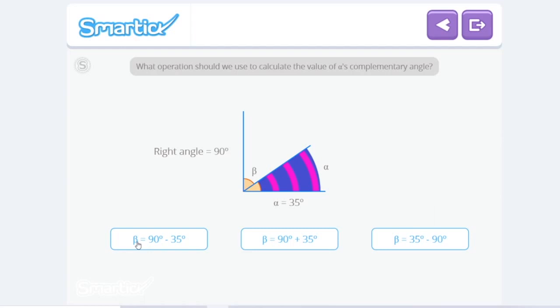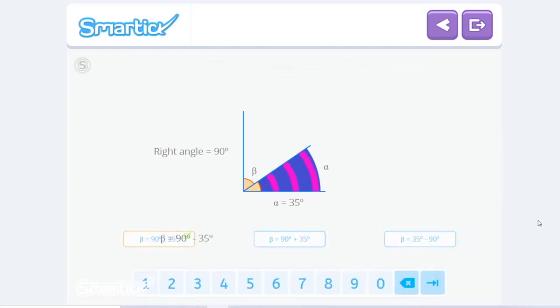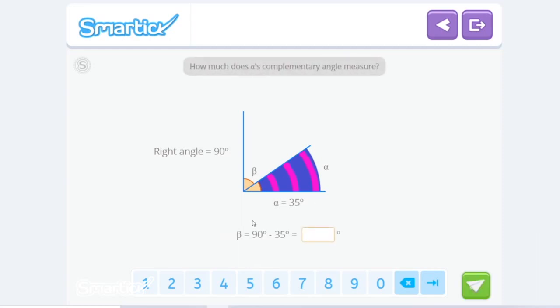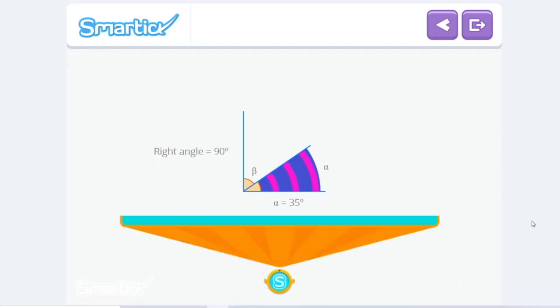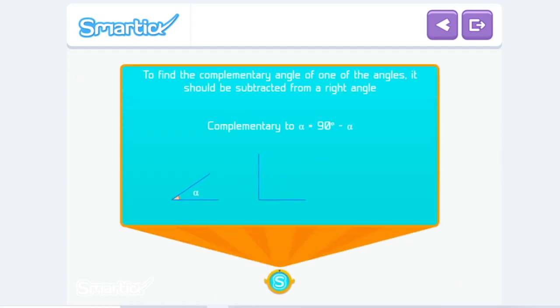So I think it's this one, 90 degrees minus 35. Nice job! How much does alpha's complementary angle measure? So 90 degrees minus 35 degrees equals 55 degrees. Perfect! To find the complementary angle of one of the angles, it should be subtracted from a right angle. It will always be less than a right angle.